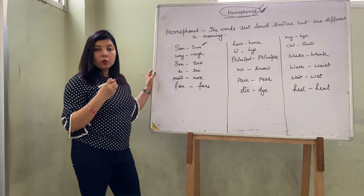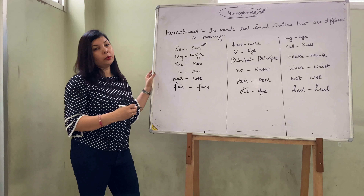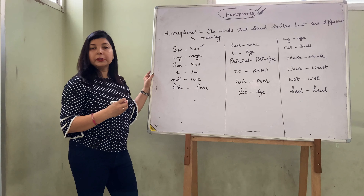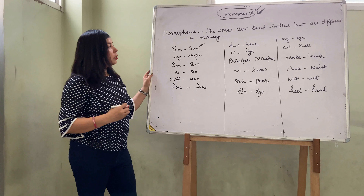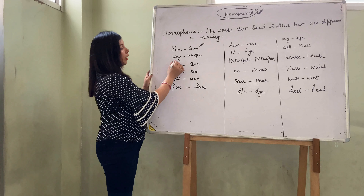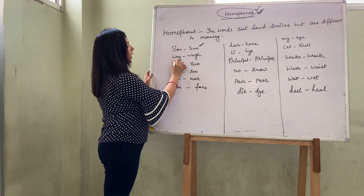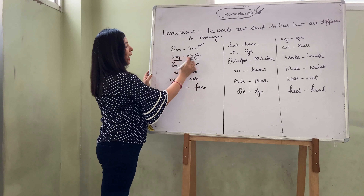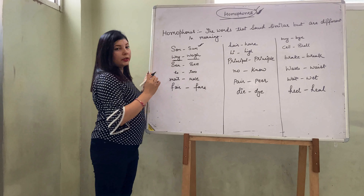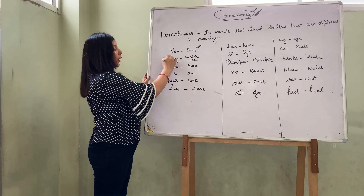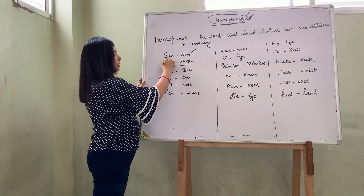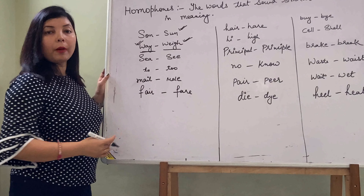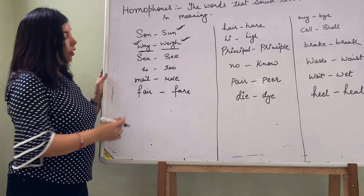By hearing only the word, you cannot understand what the person tries to say. Likewise, we have another word — 'way' and 'way'. Is 'way' ka matlab raasta, aur is 'way' ka matlab kisi ko wave karna (to wave at someone).